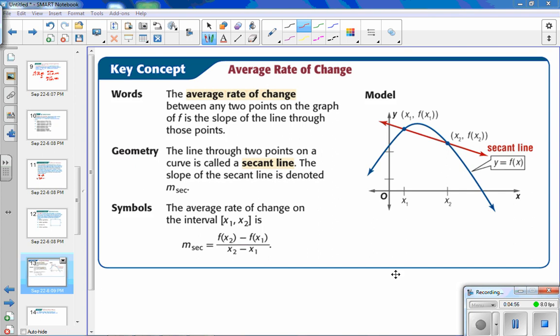We're going to talk about average rate of change now. And as we see up here, the average rate of change between any two points on the graph of F is the slope of the line through those two points. So you'll see two points on my graph or on my function F of X. And if we wanted to know the average rate of change between those two values, then we just find the slope between those two points. In geometry, the line through two points on a curve is called a secant line.